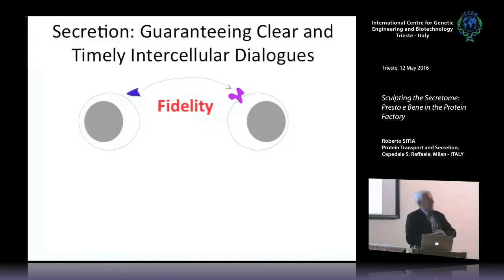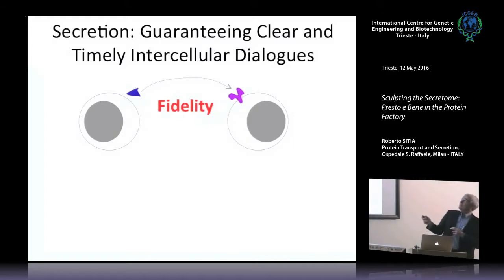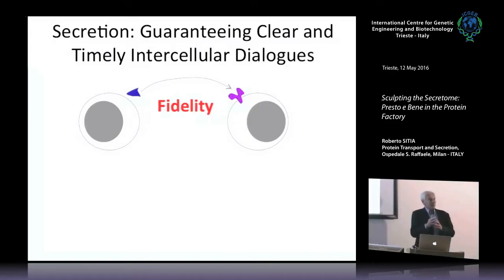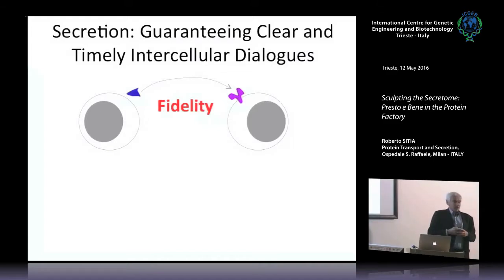The Leventhal paradox instructs us that a single protein of 300 amino acids can, in principle, assume 10 to the 30 possible conformations, of which only one is the correct one. So cells need to be very attentive to send the wanted message at the right time for the right relation. Fidelity of the message is very important.